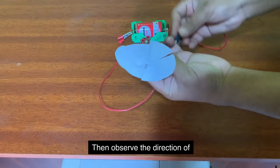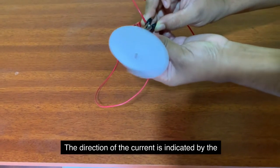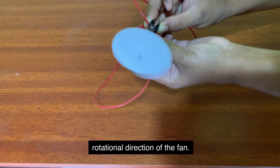Then observe the direction of rotation of the fan in the motor. The direction of the current is indicated by the rotational direction of the fan.